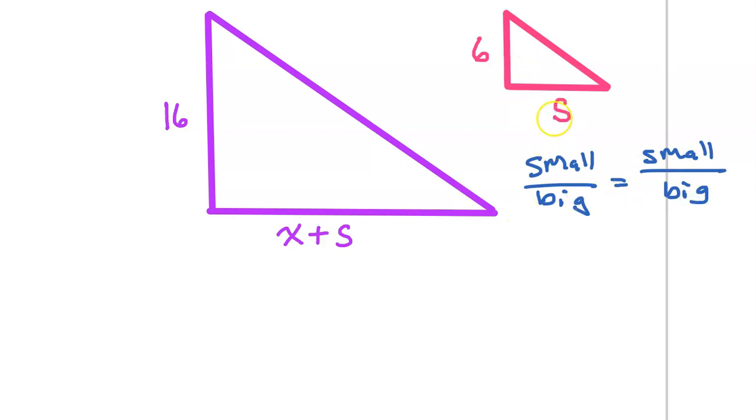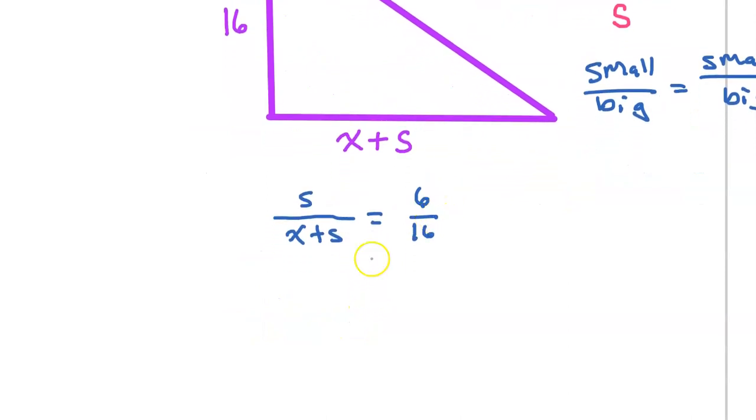So for example, looking at the S, this is a side of the small triangle, and that corresponds to x plus S on the large triangle. So I can set up my first ratio, small over big, as S over x plus S. And then I can do another small over big ratio with the 6 and the 16, so this will equal 6 over 16. I always like to reduce this fraction, it's not strictly necessary, but I like smaller numbers if I can get them. So S over x plus S is equal to 3 over 8.